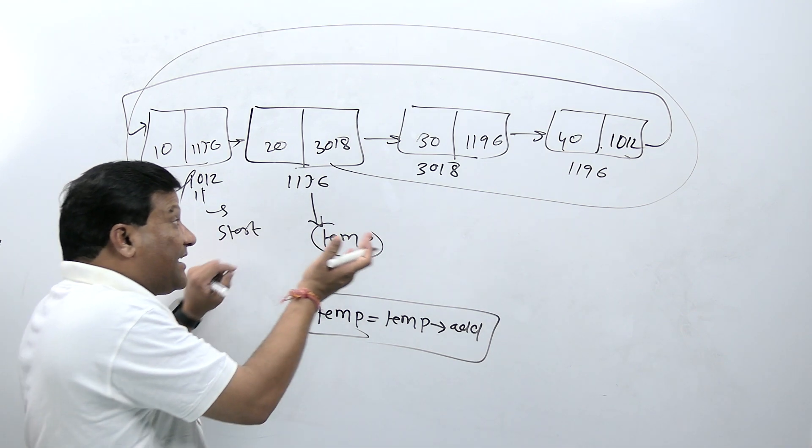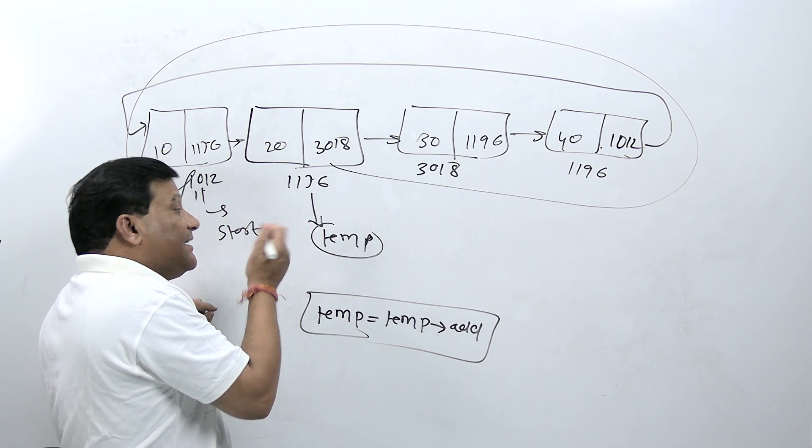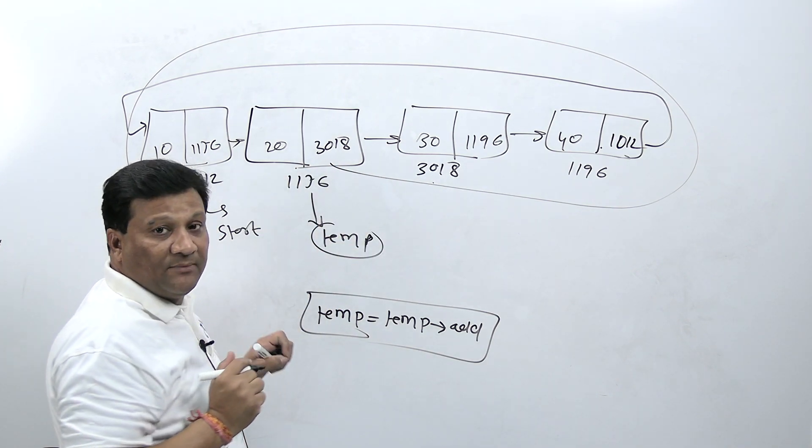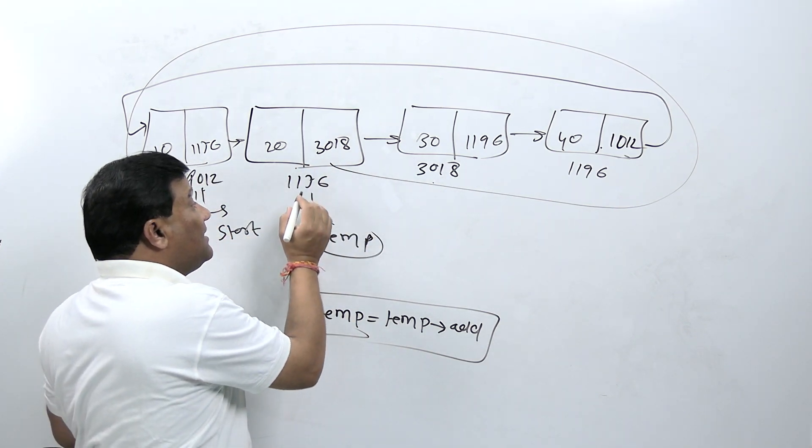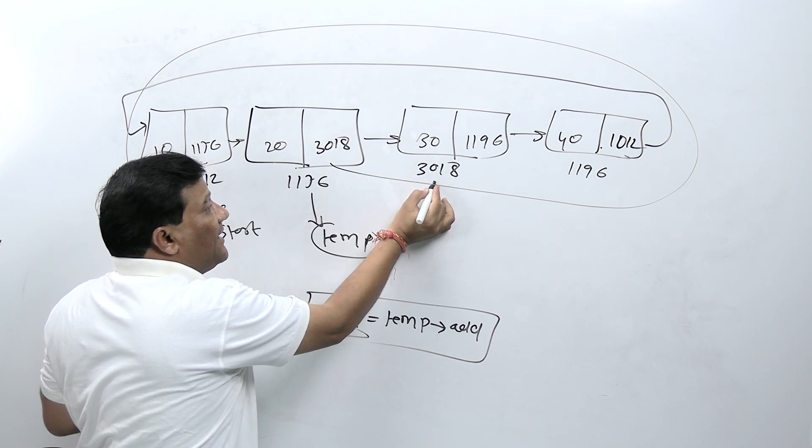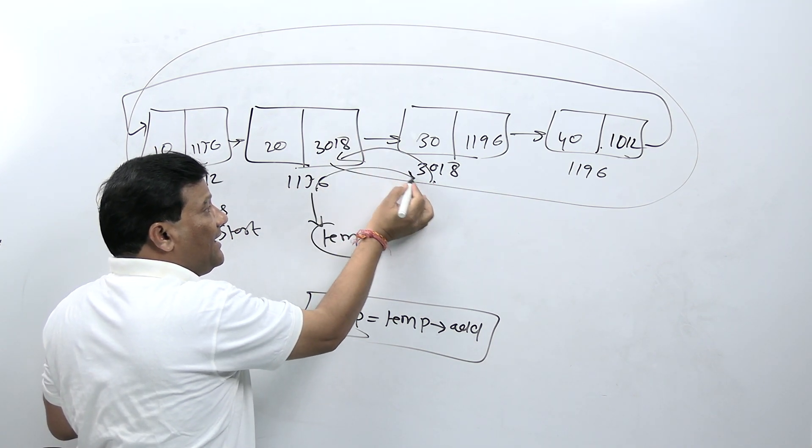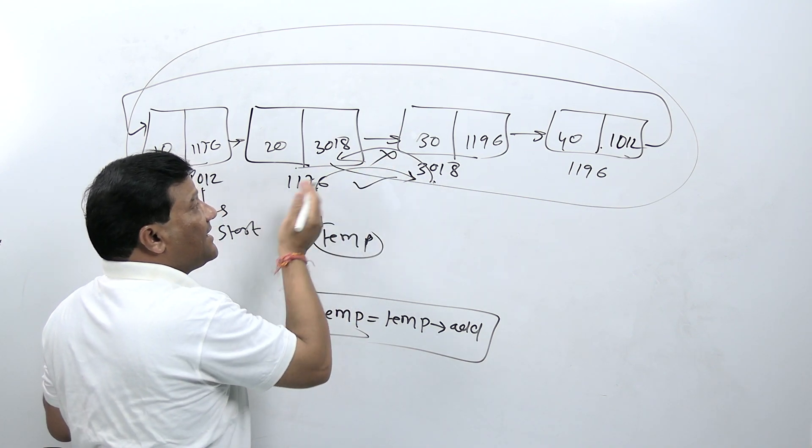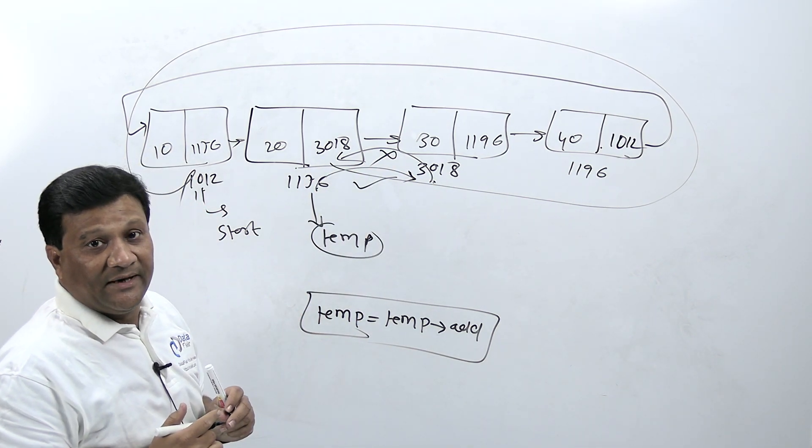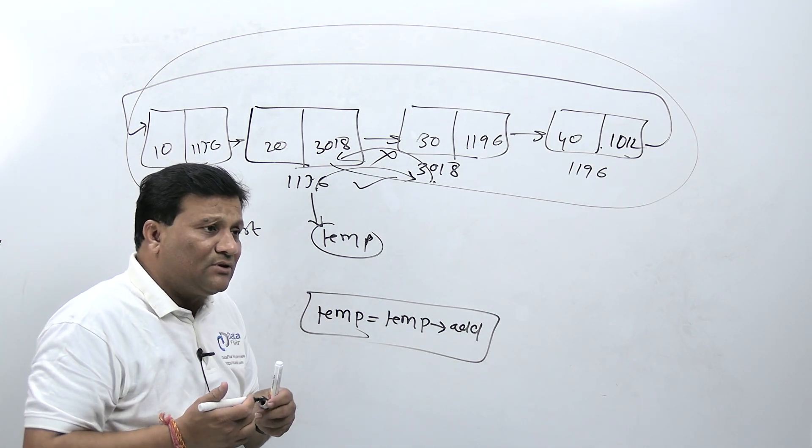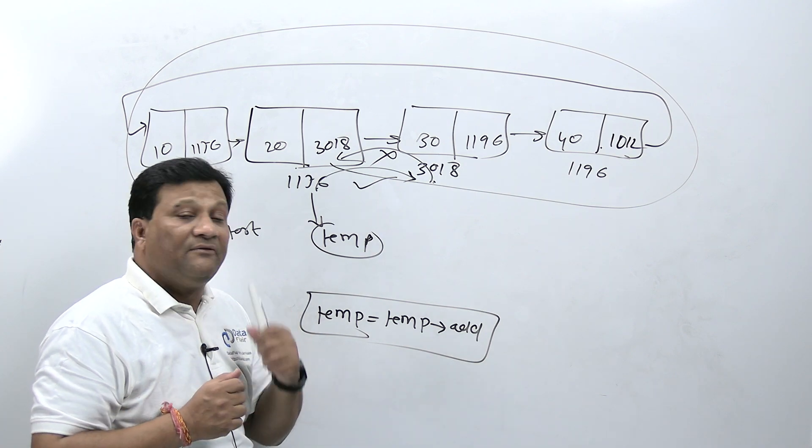In single linked list, reverse traversing is not possible. If a pointer needs to move one node back, that's not possible because this node has next node address but doesn't have address of previous node.